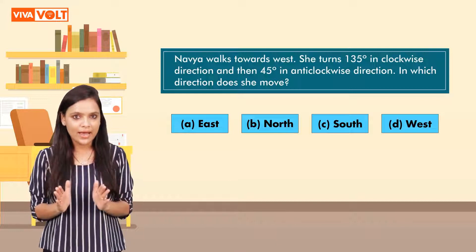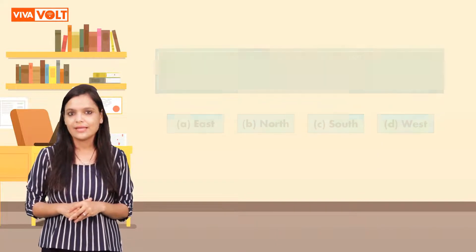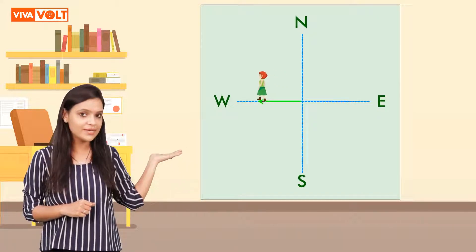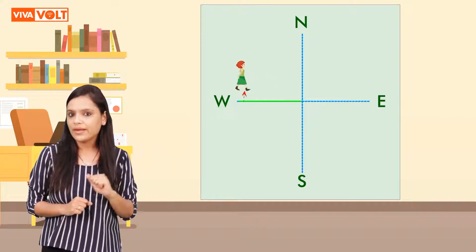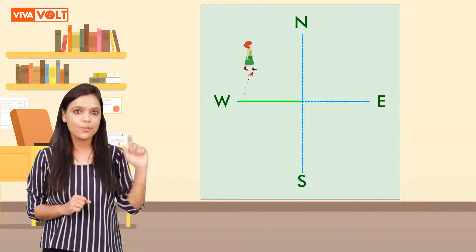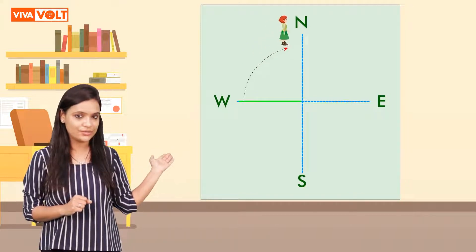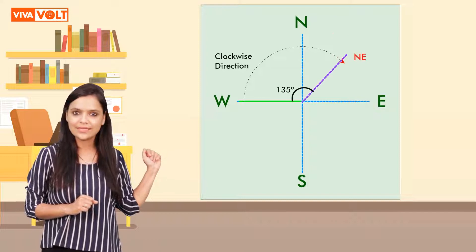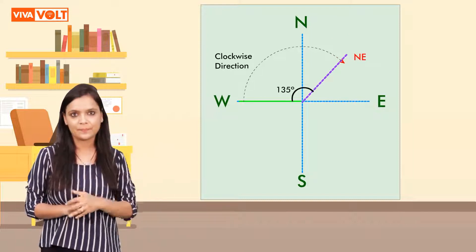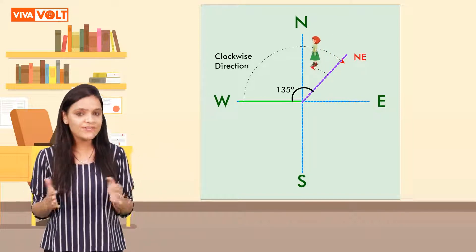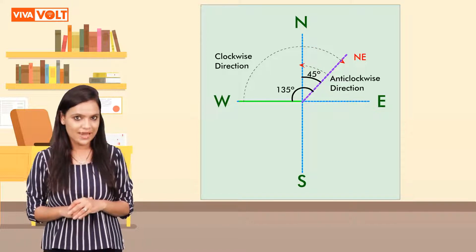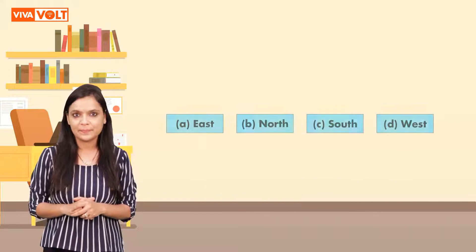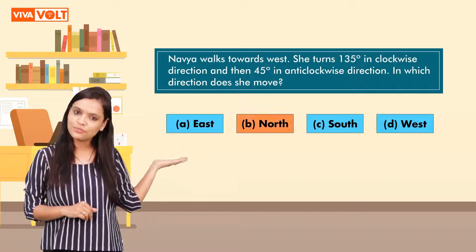Let's draw a diagram to solve this question. This diagram shows Navya's movement in different directions. When Navya moves from west in the clockwise direction at an angle of 135 degrees, she finds herself in the northeast direction. When she turns 45 degrees in the anti-clockwise direction, she finds herself in the north direction. So the correct answer is option B, North.